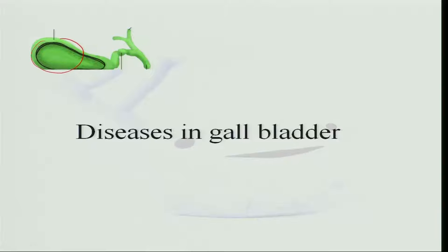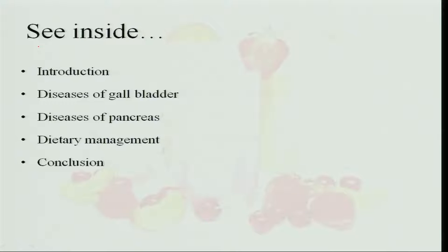Let us go back to our class again. Last class we have seen the liver disorders, the symptoms that cause liver disorders, and the dietary requirements to overcome them. The bile that liver produces is passed into the gallbladder, where it is concentrated and about 60 ml is stored. The gallbladder is a small organ present below the liver. We will now see the disease of the gallbladder and dietary management of gallbladder.